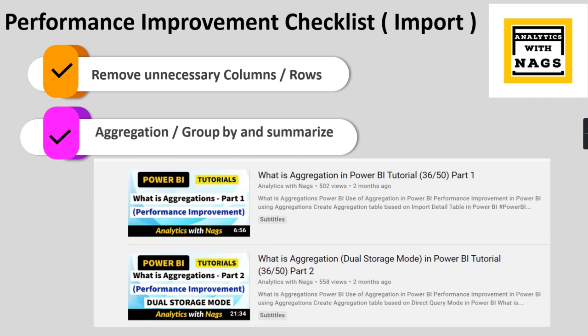The next checklist item is to make your data aggregation or group by — summarize the columns instead of directly loading the data in a table with ten or twenty million records. Try to do the aggregation. I have already made two videos on how to aggregate your data — reducing from 10 million records to 1 million, or reducing the size of rows using aggregation or group by. Go and watch those two videos to learn how.